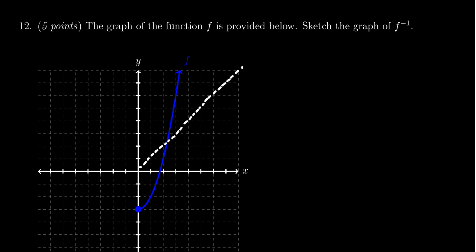So y equals x is this line, the perfect 45-degree angle. It goes through 1,1, 2,2, 3,3, 4,4, etc. So we want to reflect across that point.